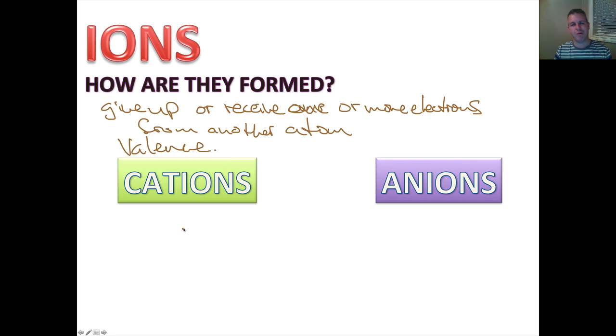What I mean by stable is basically having that outermost shell filled. So I have two types of ions we're going to look at: cations and anions. Cations are positive ions, and anions are negative ions.